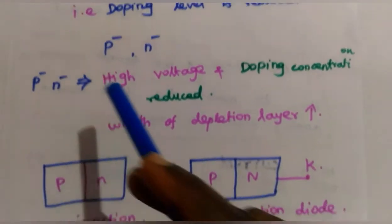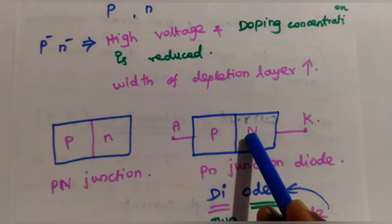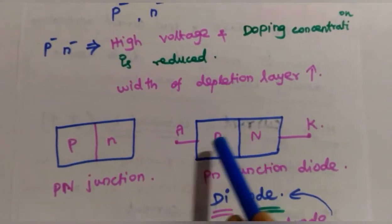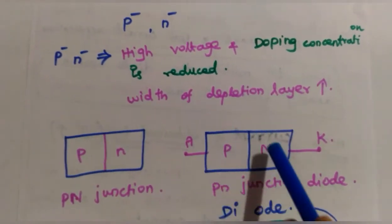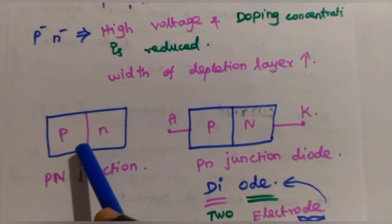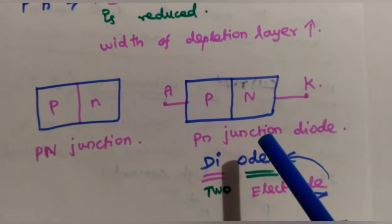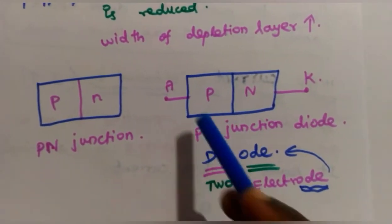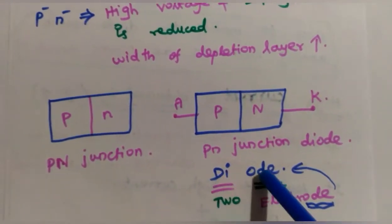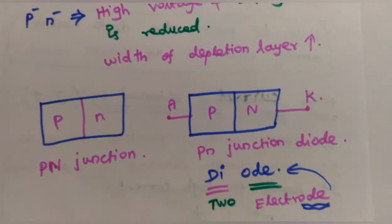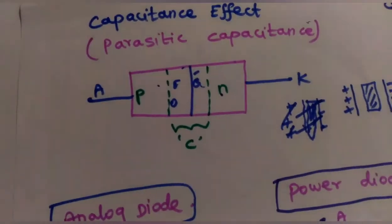The P and N materials joined together form the P-N junction. A P-N junction diode — 'di' means two, and 'ode' comes from electrode, meaning there are two terminals: anode and cathode. So the name 'diode' means a device with two terminals — the P and N layers connected at a junction with two external terminals.